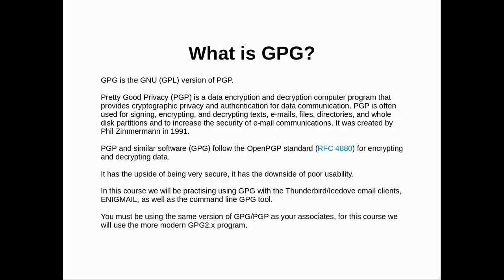GPG has the upside of being very secure, and the downside of poor usability, which we'll find out as we continue to use it in this course. We'll be practicing using GPG with Thunderbird and Icedove — Icedove is basically Thunderbird for Debian. We'll also be using Enigma, which is a popular add-on for both of those, as well as the command-line GPG tool. With GPG you must be using the same version as your associates. For this course we will use the more modern GPG 2 program — at the moment it's 2.0.22.